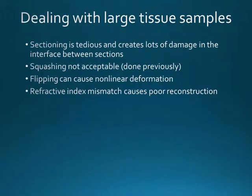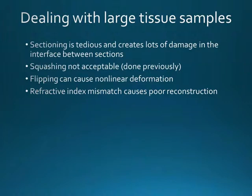How do you deal with large tissue samples? In the past, you had to section, which is quite tedious and creates a lot of damage at the interfaces between sections, making it very challenging to reconstruct neurons that cross those interfaces. Others tried squashing, but nowadays it's not so acceptable. Others flipped the tissue and imaged from both sides, but this can cause nonlinear deformation, making reconstruction very difficult.